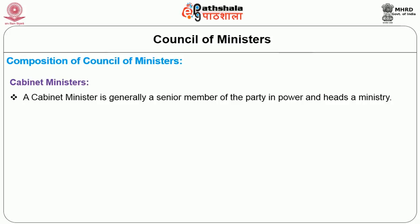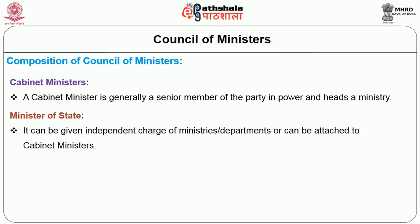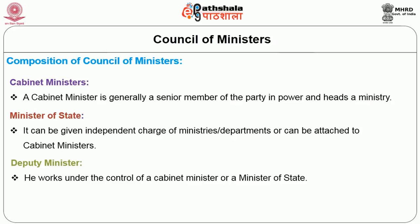The composition of the council of ministers: the council of ministers consists of three categories of ministers. First, cabinet ministers — a cabinet minister is generally a senior member of the party in power and heads a ministry. Second, ministers of state — the minister of state can be given an independent charge of a ministry or a department, or can be attached to the cabinet ministers. Third, deputy ministers — a deputy minister works under the control of a cabinet minister or a minister of state.